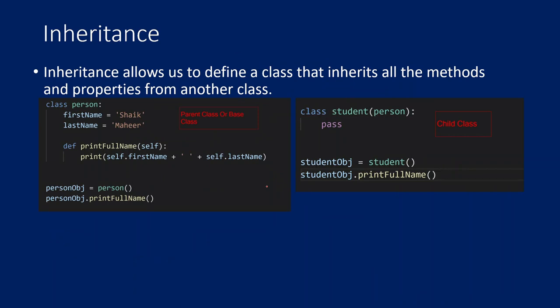So what is inheritance? Inheritance will allow you to define a class that inherits all the methods and properties from another class. So let's assume you have two classes and from one class you want to inherit all the properties and methods — then you need to go with inheritance.